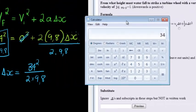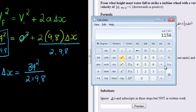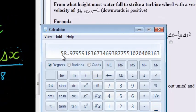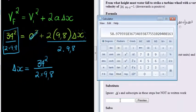34 squared divided by 2 and also divided with 9.8 gives us an answer of 58.97. This is going to be 58.99. That is going to be the answer.